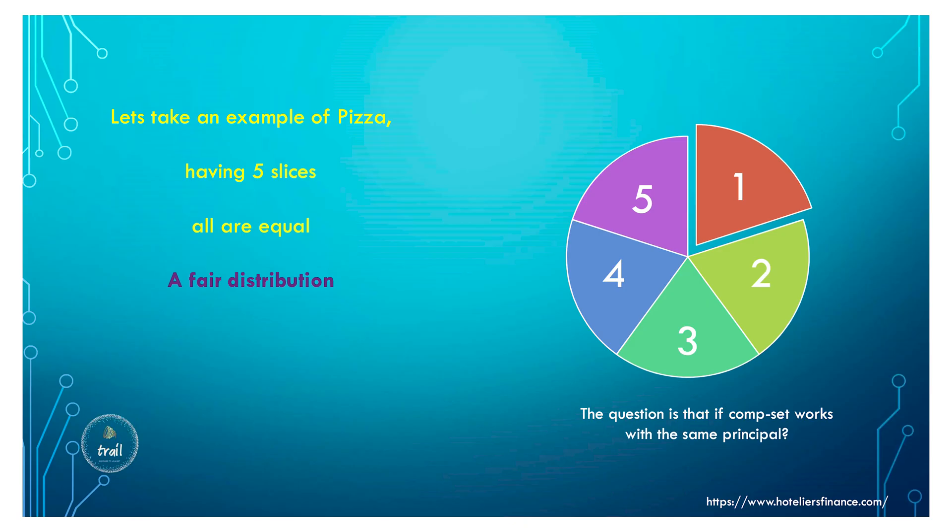What is a fair market share? Let's take the example of a pizza with five slices — each slice is a hotel. A fair distribution means five equal slices: out of a hundred, everybody gets twenty percent. That's fair distribution. But in business, fair distribution is different.